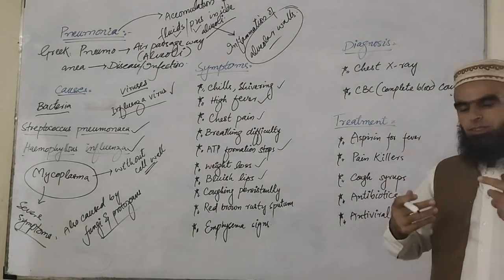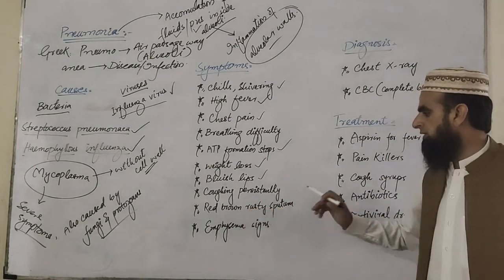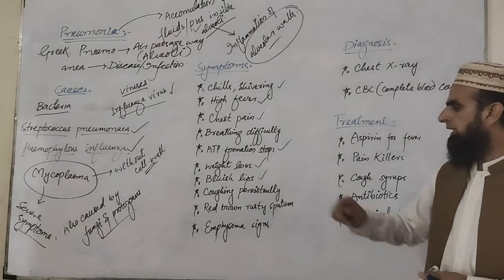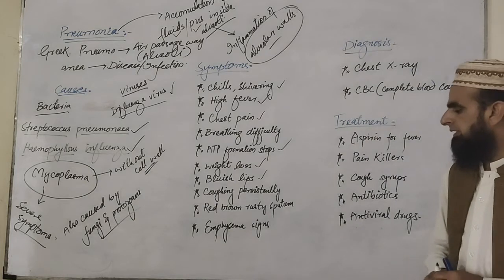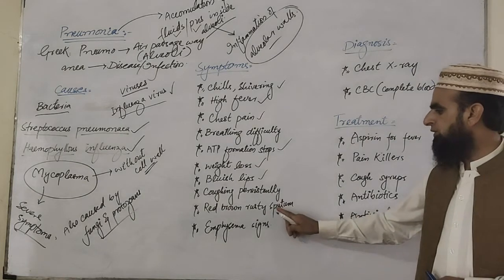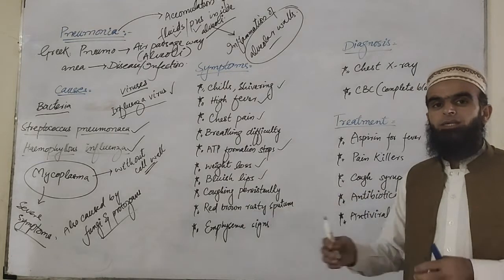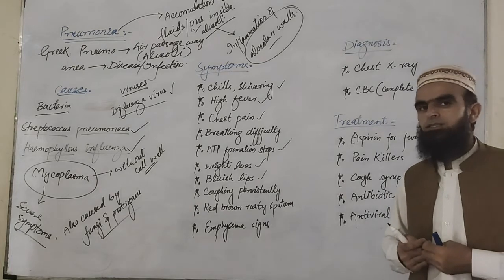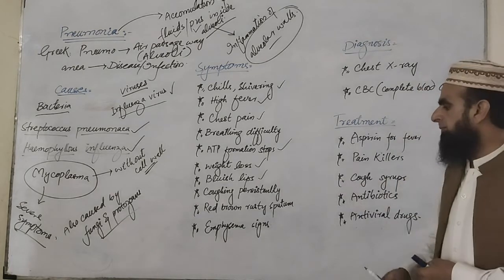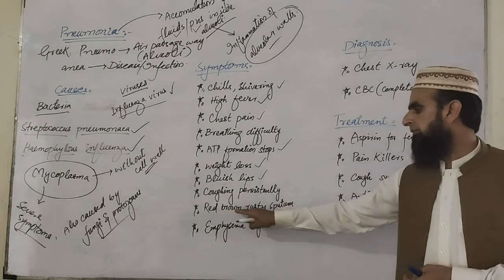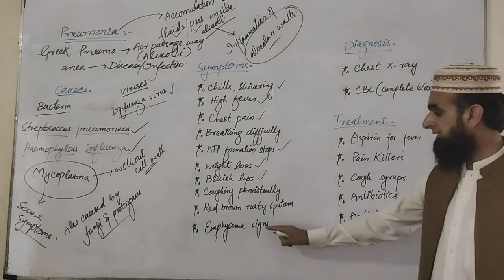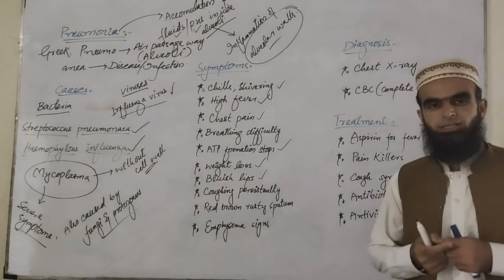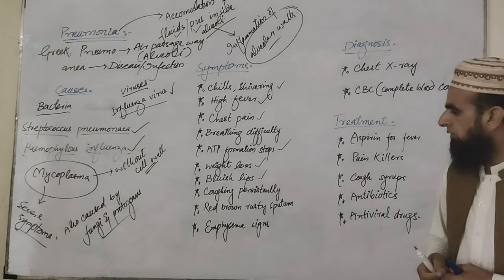Along with that, during coughing, red, brown, or rusty sputum comes out. The sputum produced because of the fluids and pus accumulation becomes rusty, red, and brown because some bleeding takes place inside the lungs and dead blood is brought out along with the sputum, giving it a red, brown, or rusty color. Lastly, during this condition, emphysema signs or symptoms of emphysema disease are also appeared.